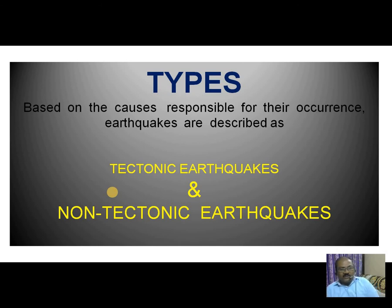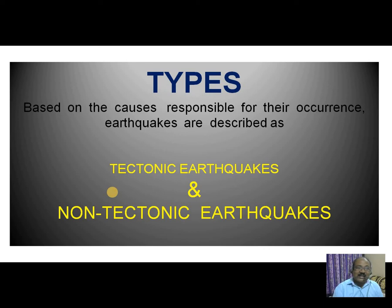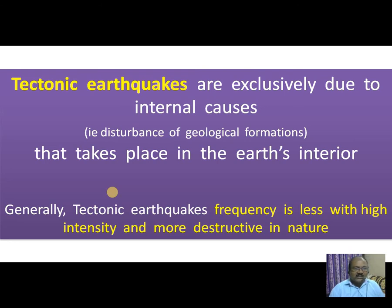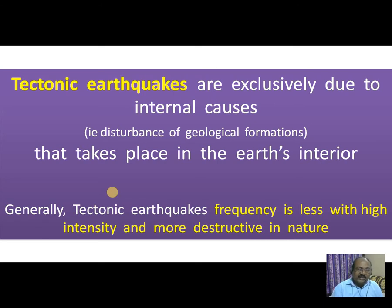Coming to the types of earthquakes, these are divided into tectonic earthquakes and non-tectonic earthquakes, based on the causes responsible for their occurrence. Tectonic earthquakes are usually formed due to internal causes — that means there is a disturbance in the geological formations that takes place in the earth's interior. Tectonic earthquakes have less frequency, but high intensity, and are more destructive in nature.